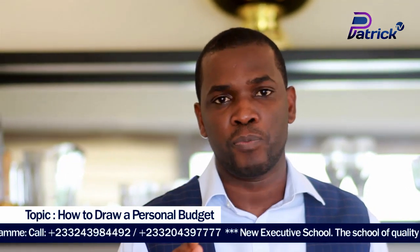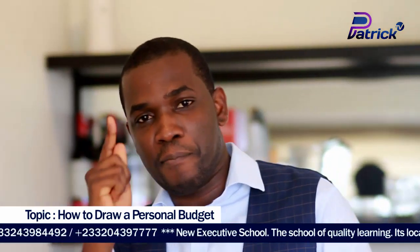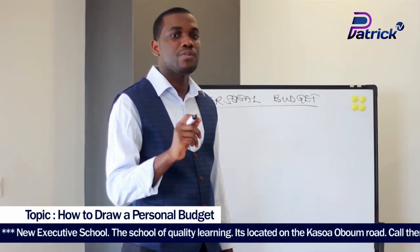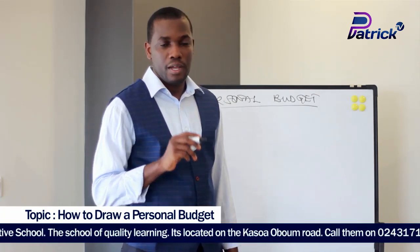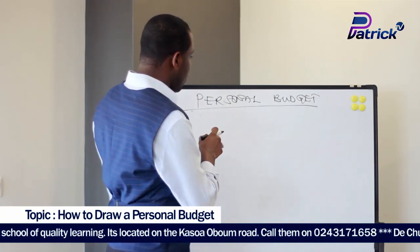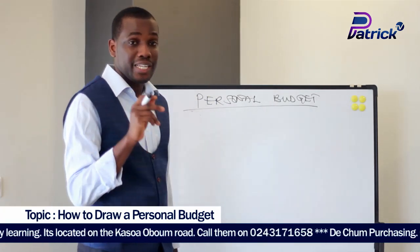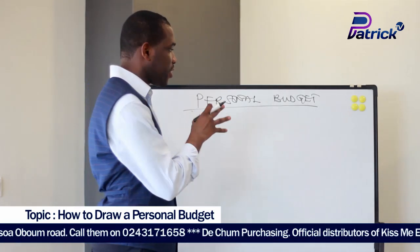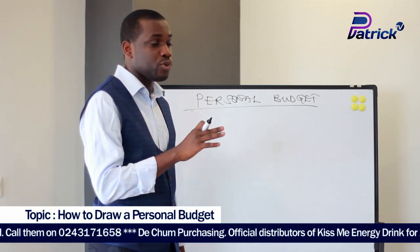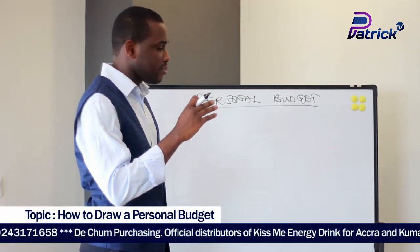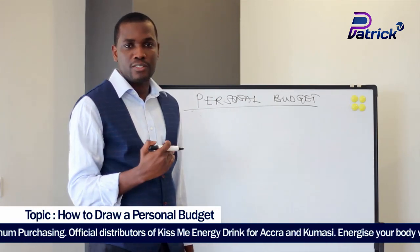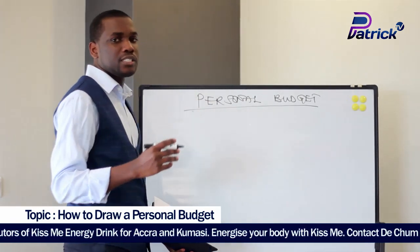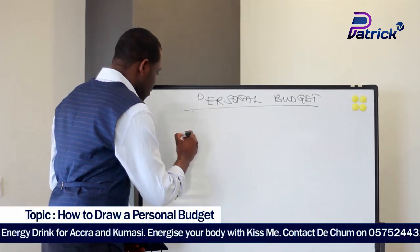Welcome back to Patrick TV GH. As I said in the introduction, today we are going to look at how to draw a personal budget. I have my board here, which suggests it's going to be an action work. Let's start by first knowing the preamble. Every budget has what we call the preamble — the preamble simply means the areas that you are going to look at to do the budget. I have about five or six preamble items we are going to look at.